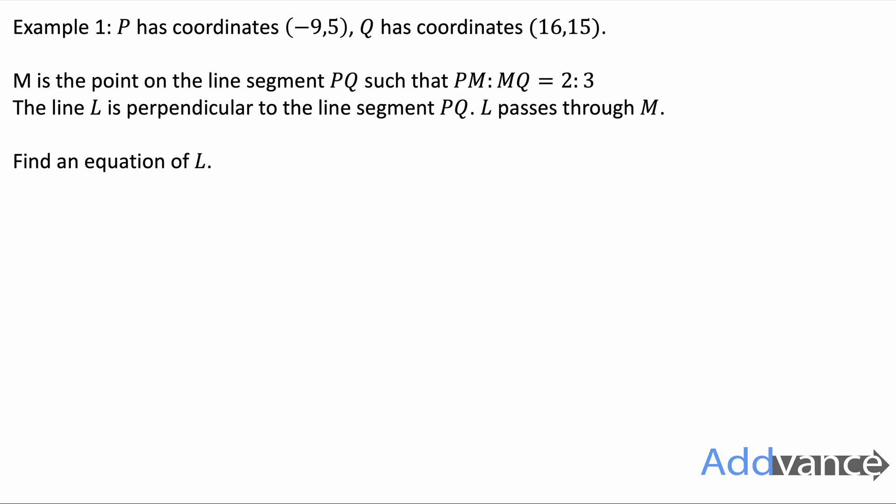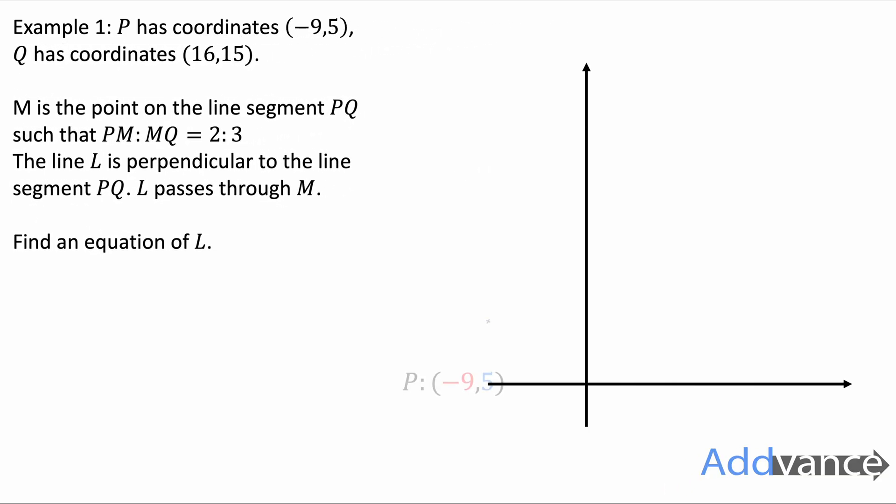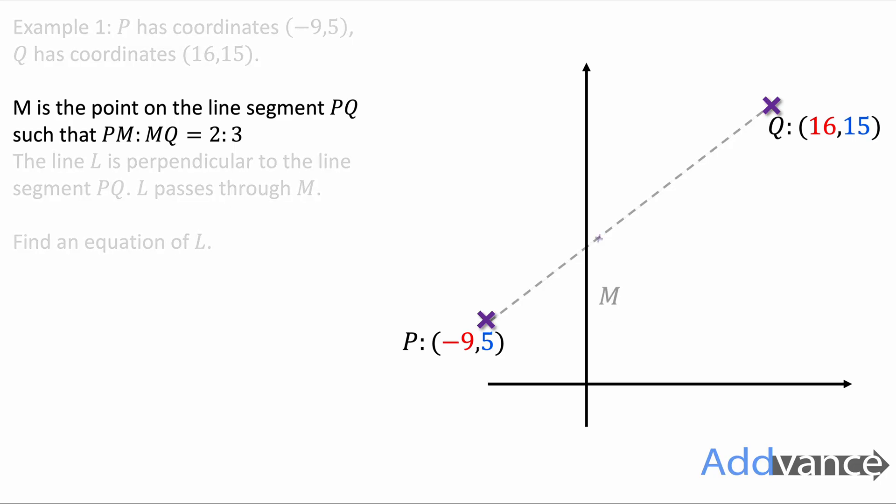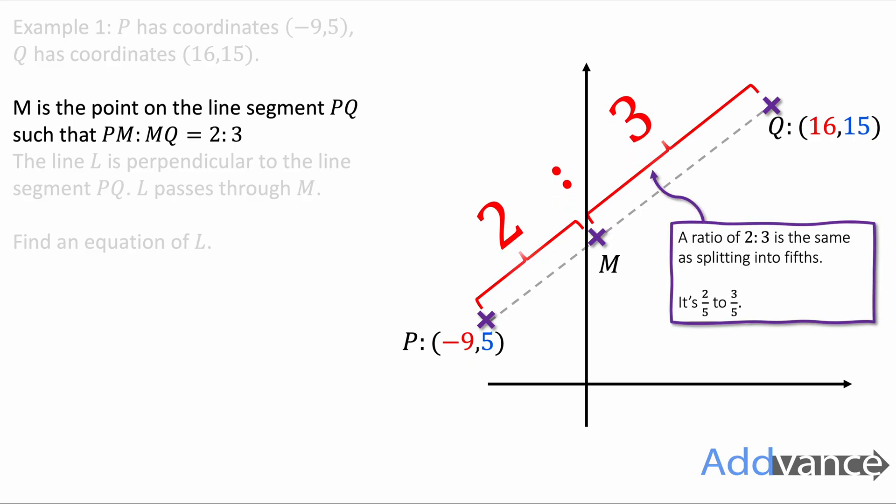So the first thing we're going to do is draw a picture of this. We sketch this out in the exam to give ourselves an idea of what this looks like. Here we've got P and Q roughly drawn, and we've also got point M on this line. M is the distance from P to M to M to Q in a ratio of 2:3. To be in a ratio of 2:3 means we're splitting it into fifths because we've got two bits and three bits, five bits. M is two-fifths of the way from P to Q.